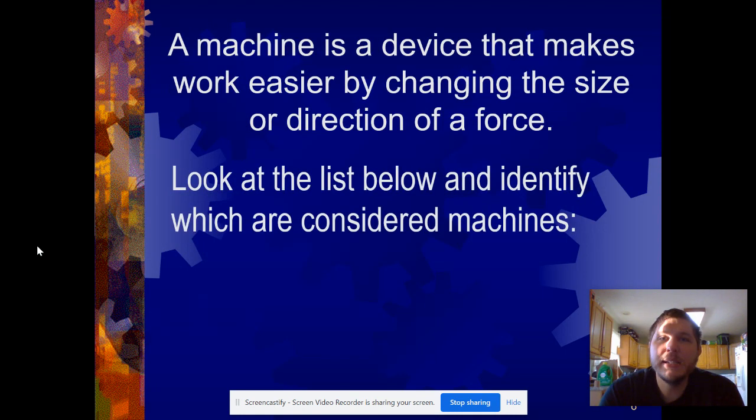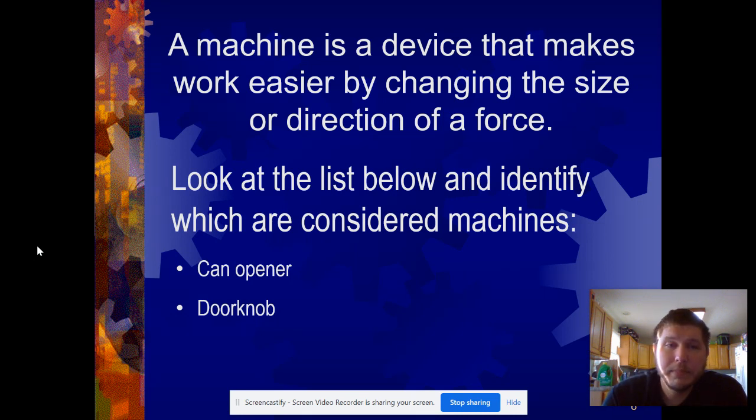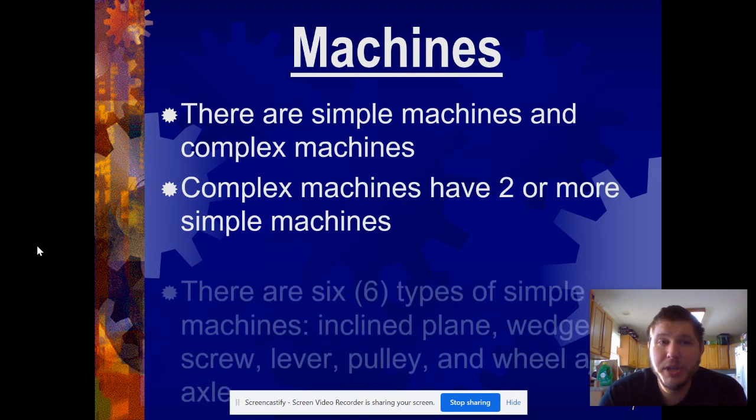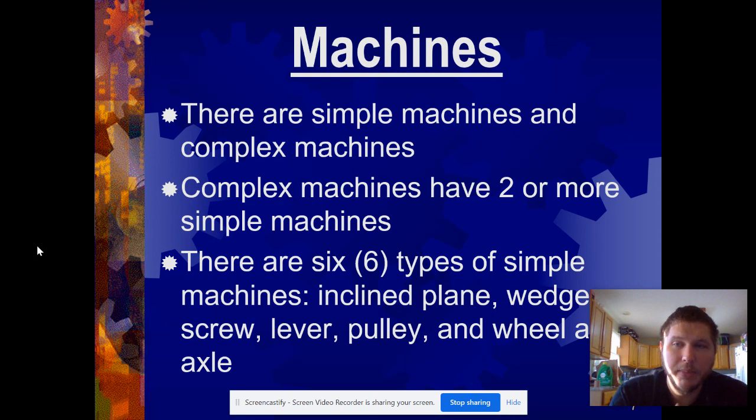So what is a machine? A machine is a device that makes work easier by changing the size or direction of a force. I'm going to list a couple here: a can opener, a doorknob, a brake on a bicycle, and then finally a knife. Take a minute to think about which ones are machines. The thing is, all four of those items are some type of machine, whether it's a simple machine or a complex machine. A complex machine is just that—two or more simple machines put together.